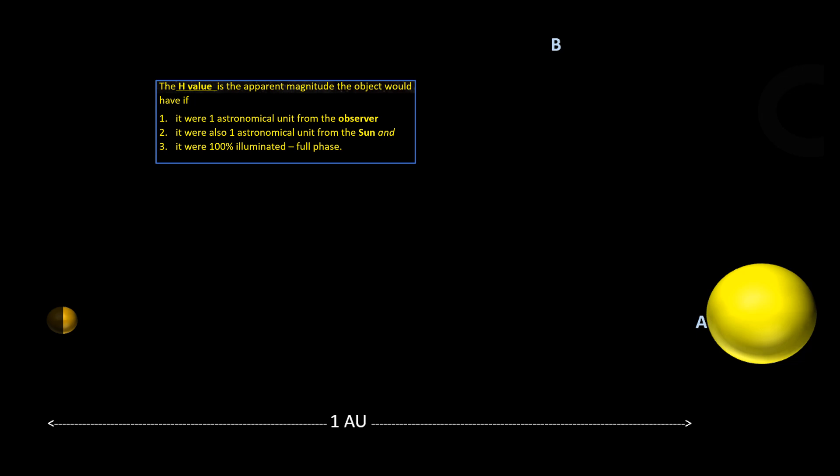However, the only way it would be possible to satisfy all three conditions would be for the observer to be located on the surface of the sun. At locations such as B, which is also one AU from the object, it would have less than 100 percent phase.